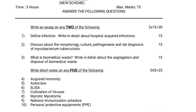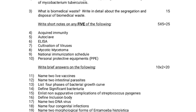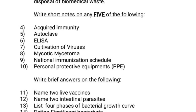Next is short notes. Write short notes on any 5 of the following. They will give 7 questions worth 5 marks each; you have to answer 5, totalling 25 marks. Fourth question: Acquired immunity. Fifth question: Autoclave. Sixth question: ELISA — that is Enzyme Linked Immunosorbent Assay.